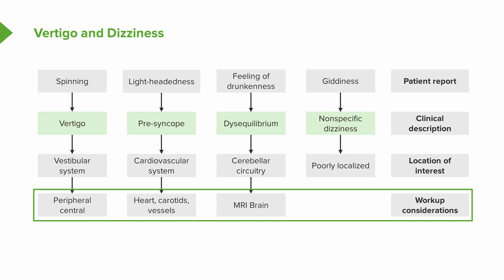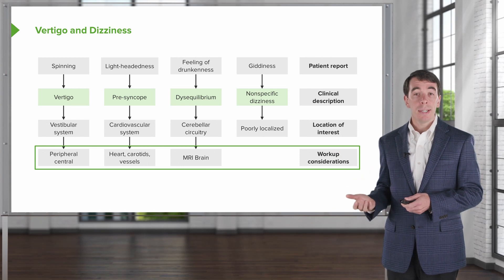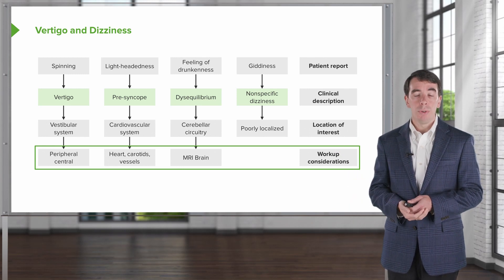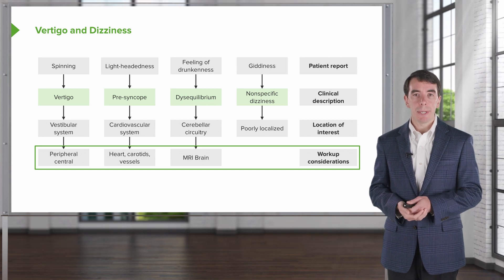Ultimately, this helps us with the workup. Vertigo arises from the vestibular system and we focus our diagnostic investigation there; for presyncope or syncope, we focus on the heart; and for cerebellar disequilibrium, we use MRI of the brain. Moving from the patient's description to my clinical assessment can be very helpful when approaching patients or clinical vignettes for this dizzying topic.